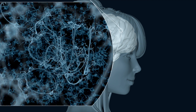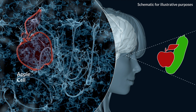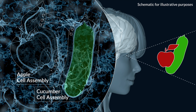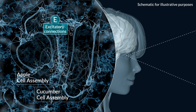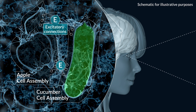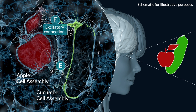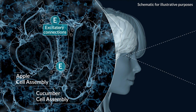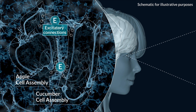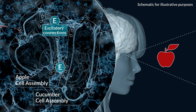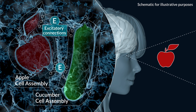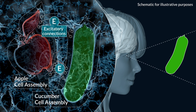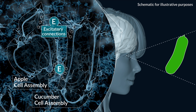For example, if you learn to associate an apple with a cucumber, then as a consequence of simple Hebbian learning, the strength of excitatory connections that lie between these two cell assemblies that represent apple and cucumber will increase. This will then lead to an increase in characterization of these two cell assemblies, such that when you see apple, some of the neurons that represent cucumber will fire, and when you see cucumber, some of the neurons that represent apple will fire.